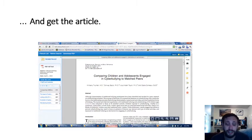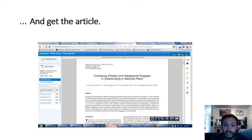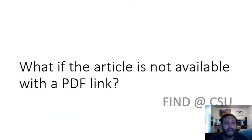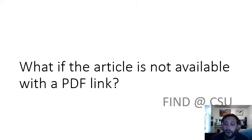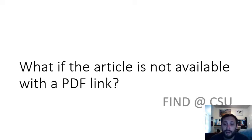There's the article right there — you can read through the full article to do your literature search and summarize it for your writing assignment. Unfortunately, it's not always that easy. Sometimes the PDF article link is not available. When that happens, we use something called Find at CSU, which tries to locate the article elsewhere in Colorado State University's library system.